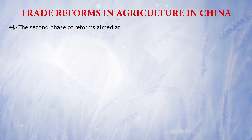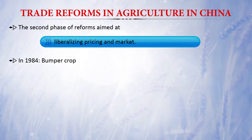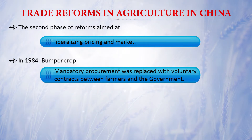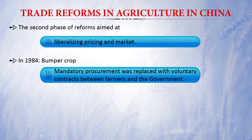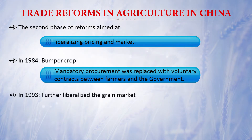The second phase of reforms aimed at liberalizing pricing and the market in China. In 1984 there was a bumper crop production, and China modified its procurement policy — mandatory procurement was replaced with voluntary contracts between farmers and the government. In 1993, further liberalization of the grain market occurred.